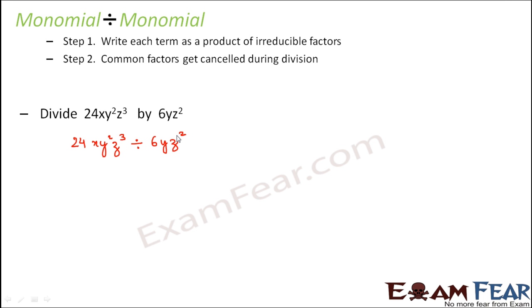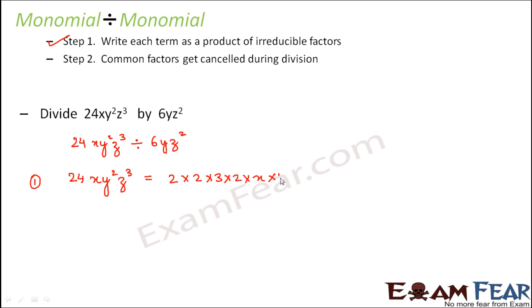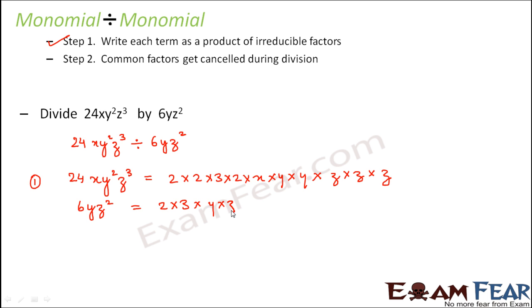Step 1: write each term as a product of irreducible factors. So 24xy²z³ can be written as 2 × 2 × 2 × 3 × x × y × y × z × z × z. And 6yz² can be written as 2 × 3 × y × z × z.